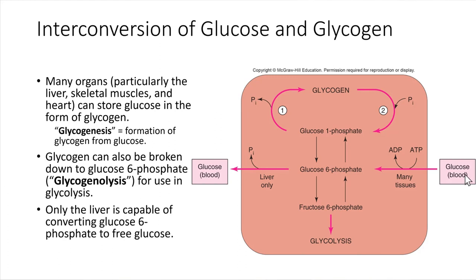Once glucose is taken up from the bloodstream inside of cells, it gets modified a little bit — it gets a phosphate group attached to it. That's an interesting thing because once that phosphate group is attached, it prevents the molecule from being able to leave the cell. So it kind of traps the glucose inside of the cell. That glucose 6-phosphate can be converted into the form of glycogen, which is the stored form of glucose.